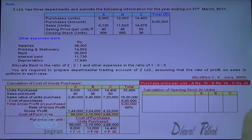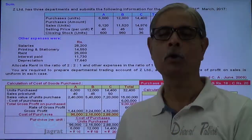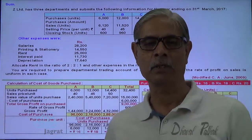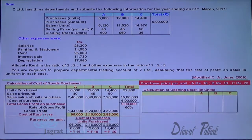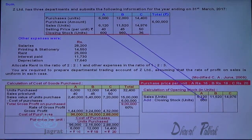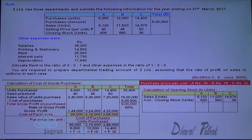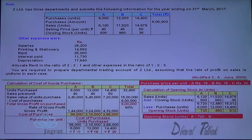Now I prepare another working note. I am given purchase units and closing stock units but not opening stock units. I need to find the opening stock units to prepare the trading account. Opening stock units = Sales units + Closing stock units − Purchase units. This gives all units available for sale equals opening stock plus purchases, so rearranging gives opening stock. I have now worked out the opening stock units for each department.